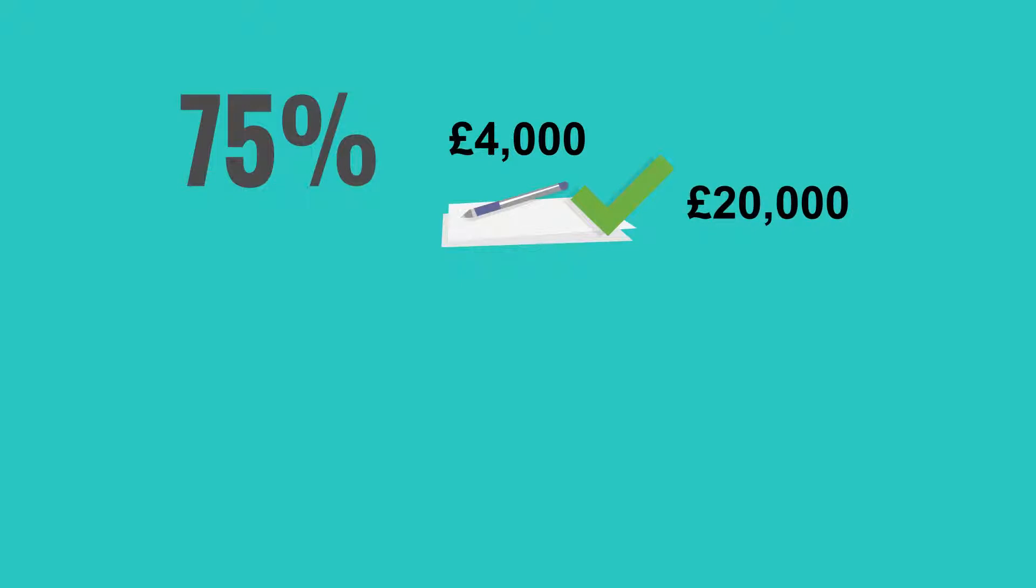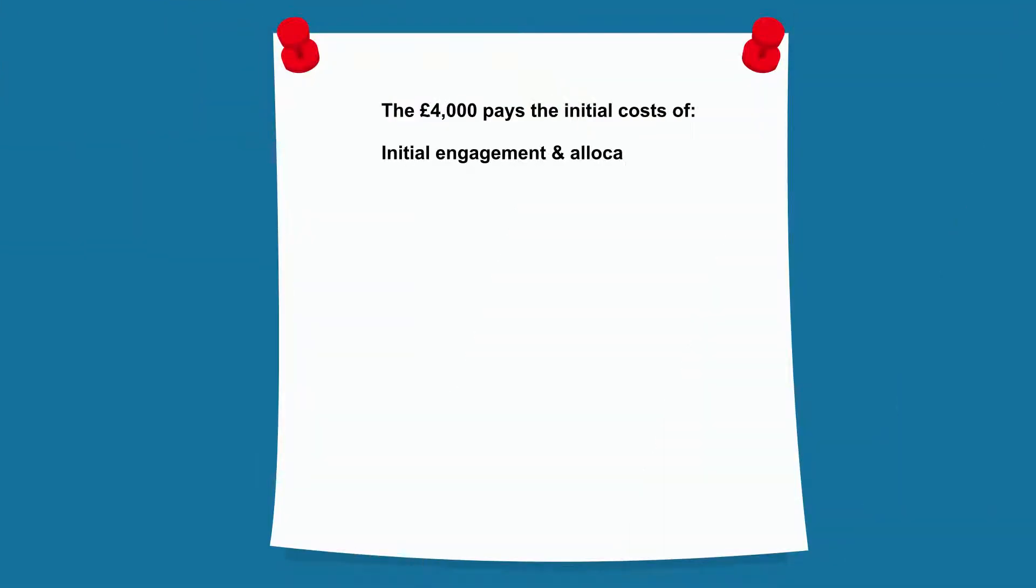The £4,000 pays the initial costs of initial engagement and allocation of a qualified claimant, engagement of an SRA Solicitor's Regulatory Authority solicitor.